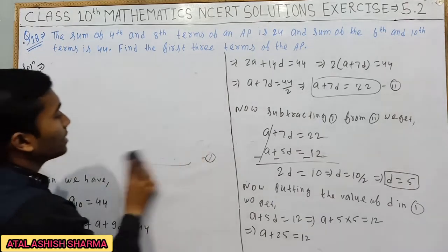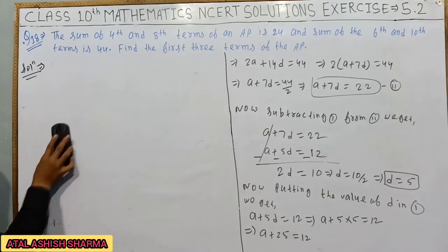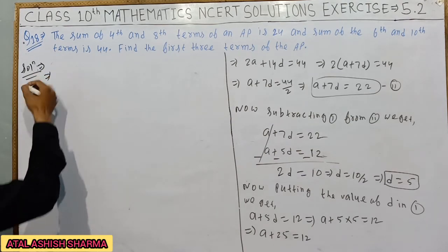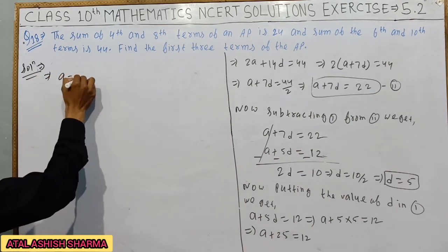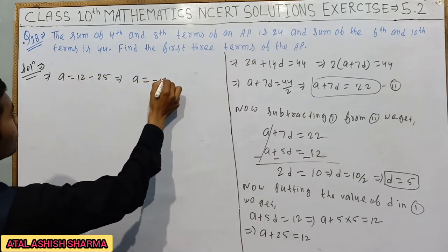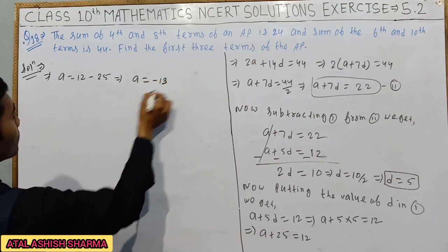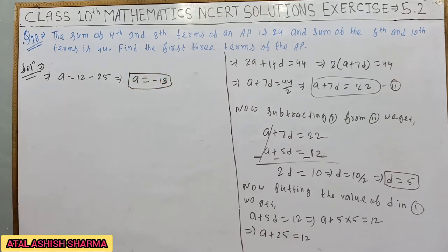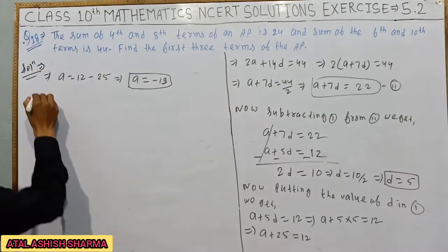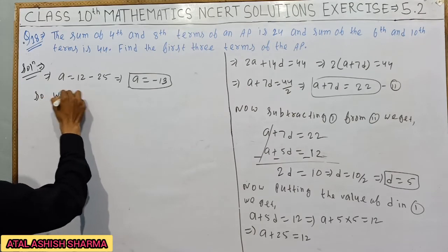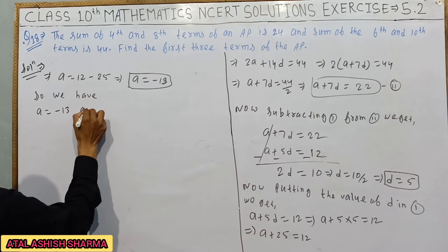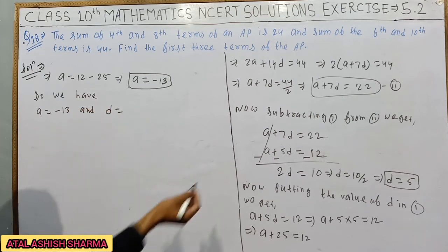This gives a equals 12 minus 25. So the value of a is minus 13.